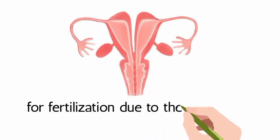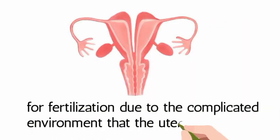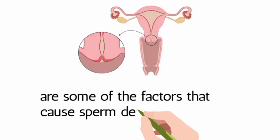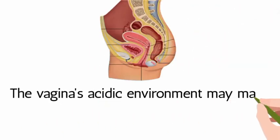The immune system's reaction, mechanical obstacles, and an acidic pH environment are some of the factors that cause sperm death in the uterus. The vagina's acidic environment may make it more difficult for sperm to survive, but the cervix offers a slightly alkaline environment that is more favorable for their passage.